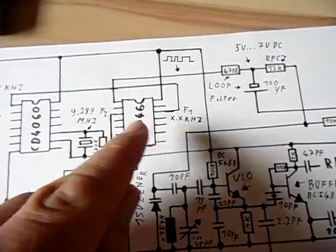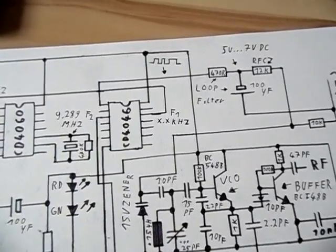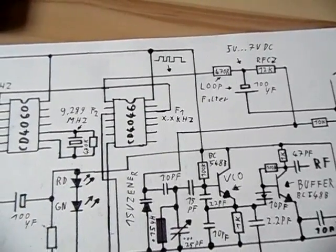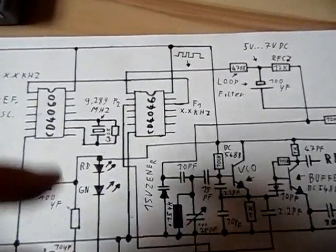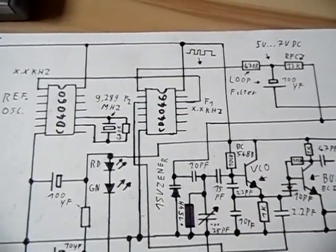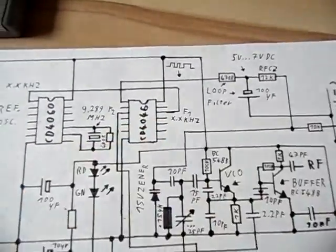Now, what the circuit does, the CD4046, it compares two frequencies. It compares frequency two, which is the actual frequency from the transmitter, with frequency one.